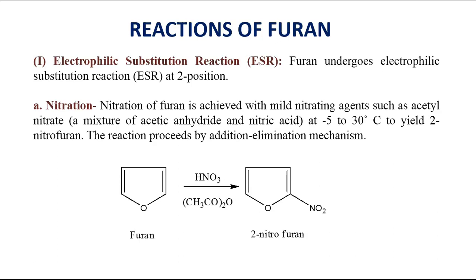Furan undergoes two types of reactions: the first is electrophilic substitution reaction, and the second is reduction reaction. All electrophilic substitution reactions of furan take place at the second position. The first reaction is nitration — nitration of furan can be achieved by use of mild nitrating agents such as HNO₃ and acetic anhydride. This reaction is carried out at −5 to 30 degrees Celsius to give 2-nitrofuran, where the nitro group is attached at the second position.